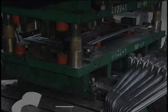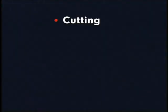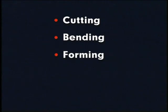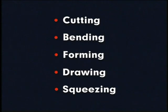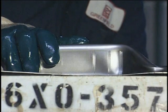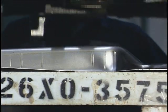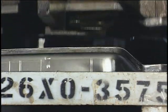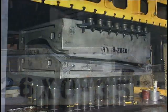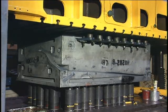Basic die operations include cutting, bending, forming, drawing, and squeezing. The two most common types of dies, however, are cutting dies and forming dies.